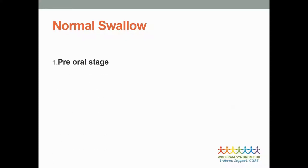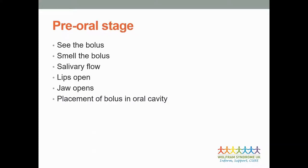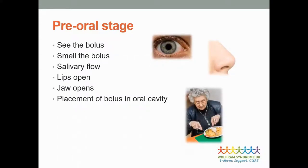The normal swallow is made up of four different stages: the pre-oral stage, the oral stage, the pharyngeal stage, and the oesophageal stage. The pre-oral stage encompasses everything that happens before your food and drink reaches your mouth - this includes seeing and smelling your food and drink, producing enough saliva, using your hands to bring the item to your mouth, and using the muscles that control your lips and jaw to open your mouth.